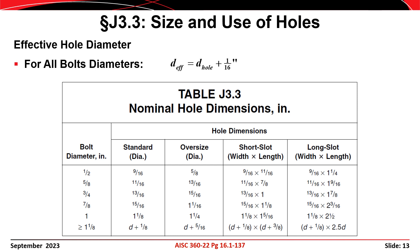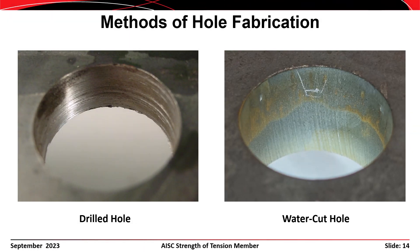Table J3.3 of the AISC specification provides the dimensions of holes. The tolerances are larger for bolts 1 inch in diameter and larger than for bolts 7/8 inch and smaller. If slots are used, the orientation of the slot relative to the member is important, as in some cases you would deduct the width of the slot and in other cases the length. For all bolts, the effective dimension of the hole equals the actual dimension plus 1/16 of an inch. Holes can be made by drilling, punching, or cutting using oxyacetylene torches, plasma torches, lasers, or water jets.